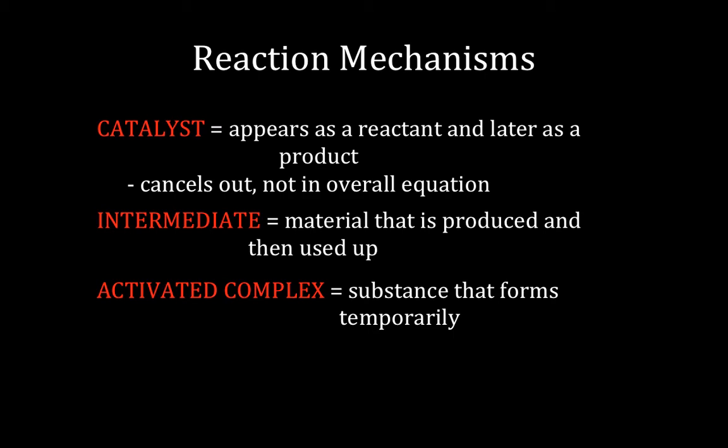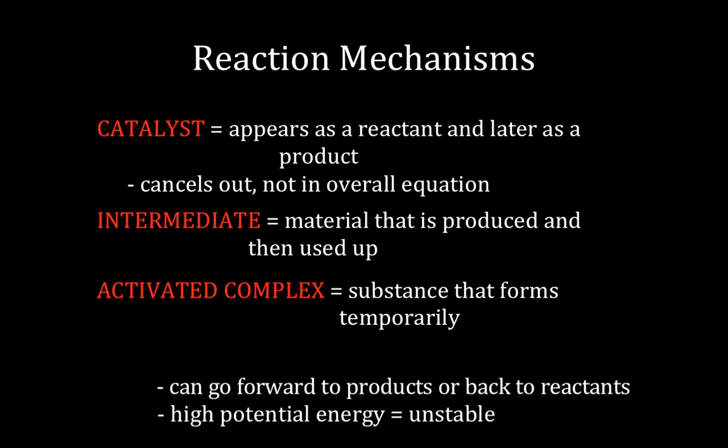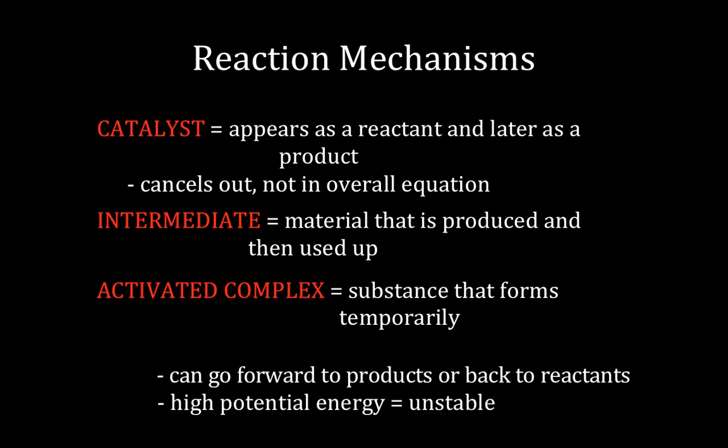Activated complexes are not included in reaction mechanisms. They occur at the peak. They're a very unstable chemical arrangement, and it can spill back towards the reactants or forward into the products. And so if we're comparing these things, an intermediate would be more stable than activated complex. Catalysts and intermediates are included in reaction mechanisms. Activated complexes are not. And none of these things are included in an overall reaction.